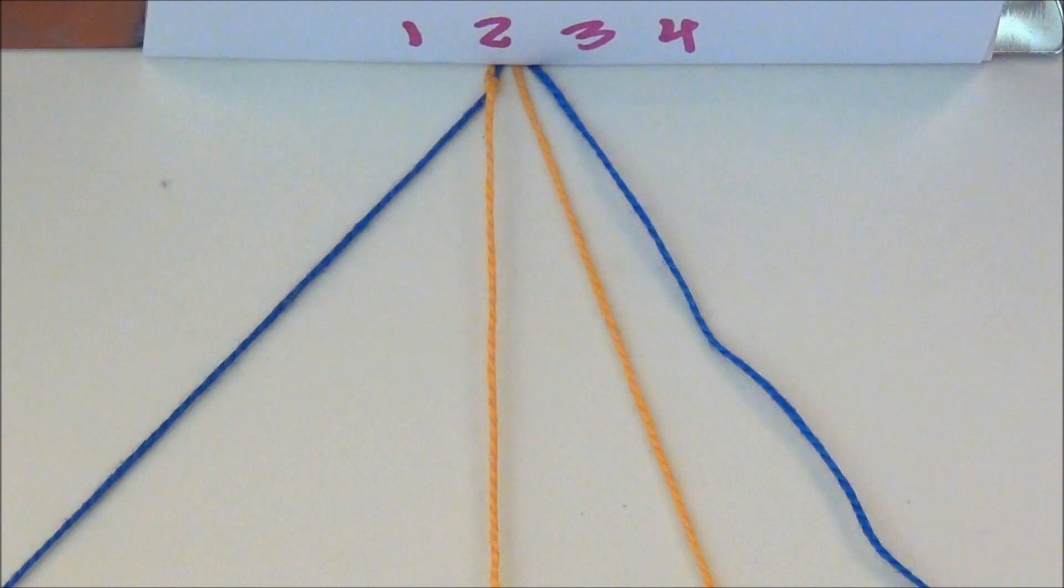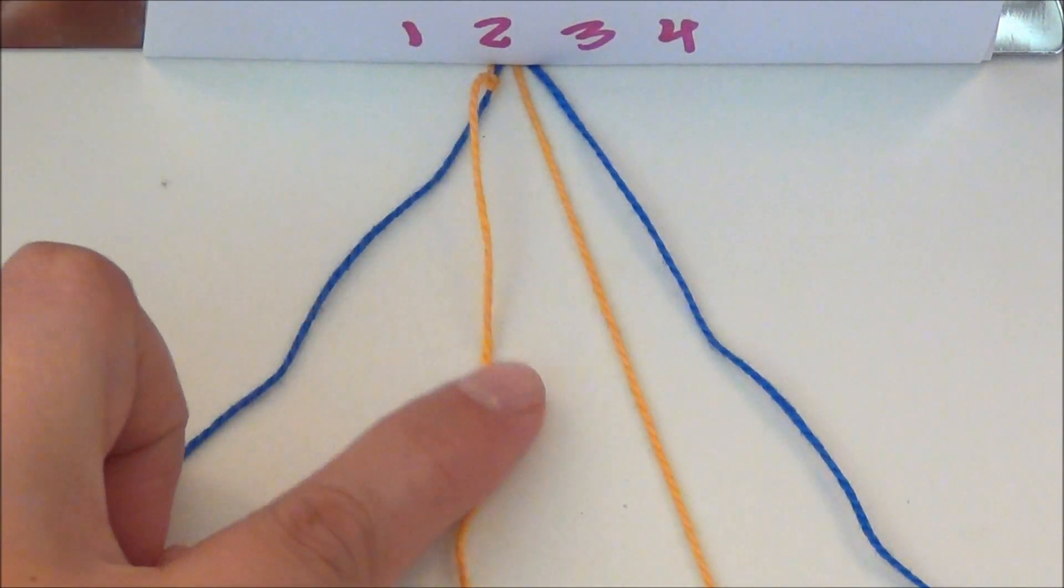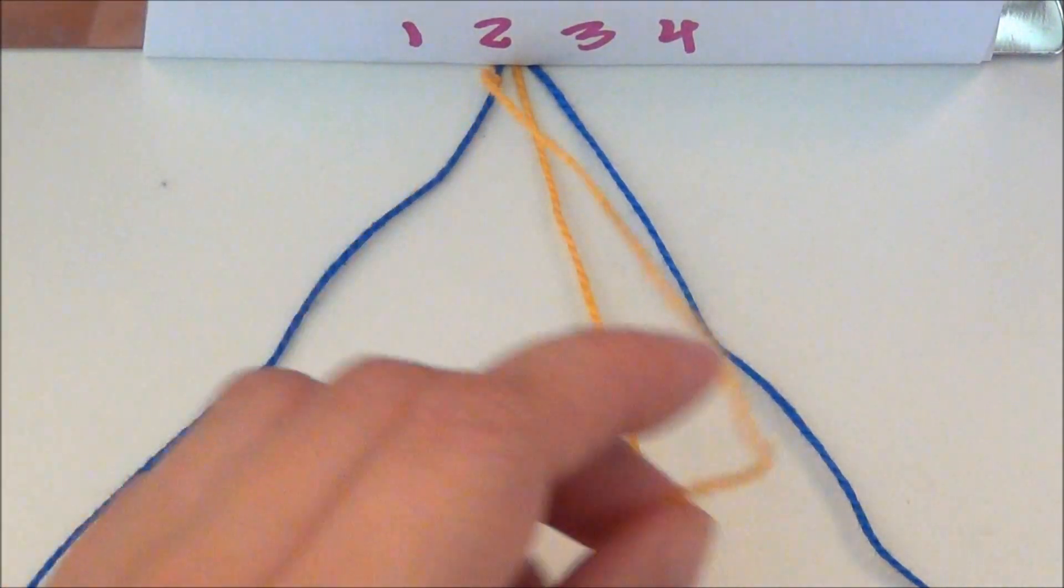After that knot has been tied, the strings switch places. What was originally number two is now number one, and number one is now number two. You keep going with the same string that you were tying onto until you're done with all the strings.